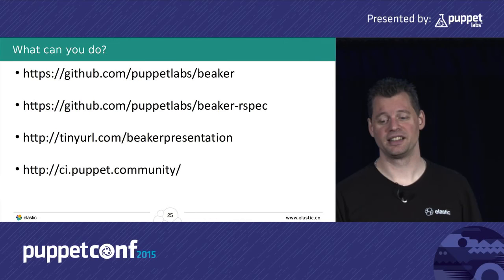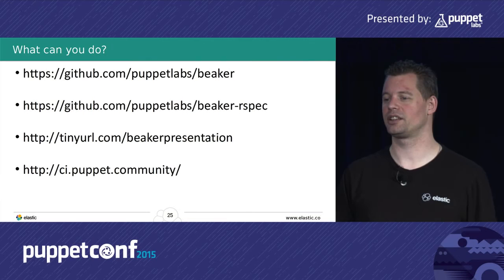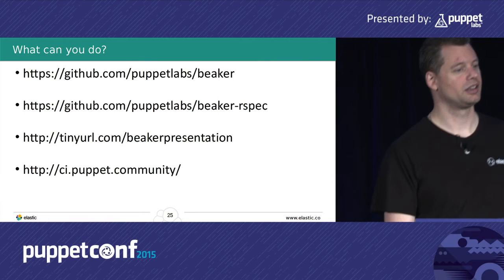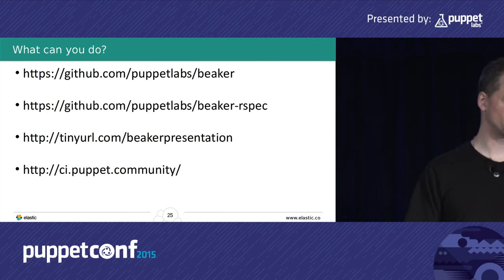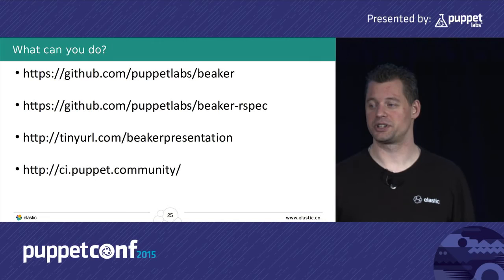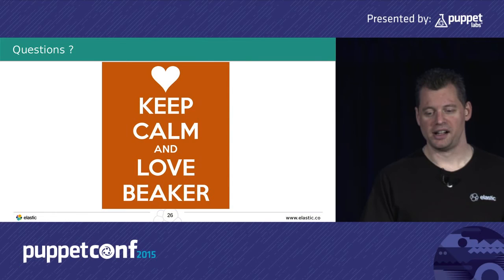Hopefully I've made you interested in using Beaker for your module testing. You can go to the Puppet Labs organization on GitHub and check out the Beaker and Beaker RSpec repos — there's a lot of detailed information on the wiki pages of those repos. There's also an amazing presentation from last year at PuppetConf from Alice about how Beaker works and why it was made. And also, if you don't build that many modules but do want to test them, the Puppet Community has built their own CI infrastructure which is free for everybody to use.